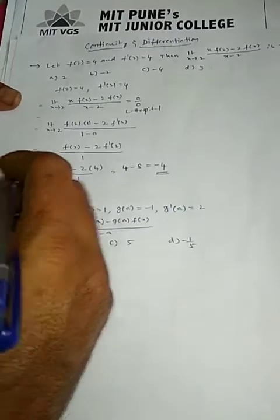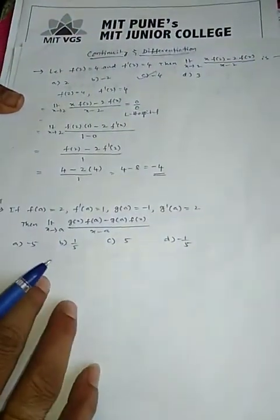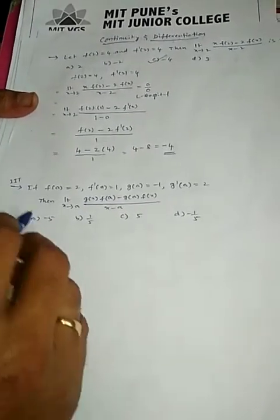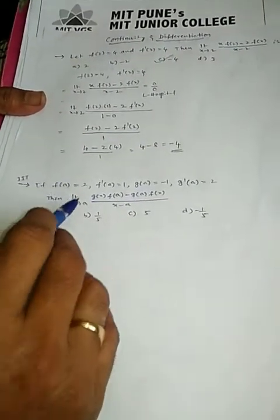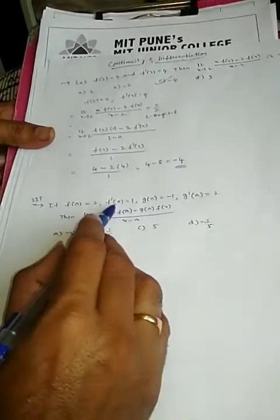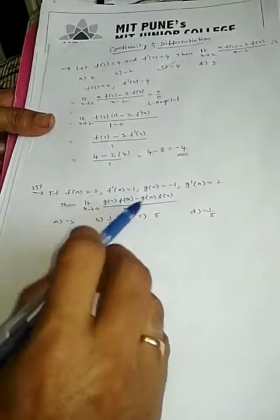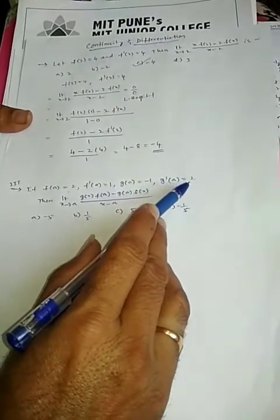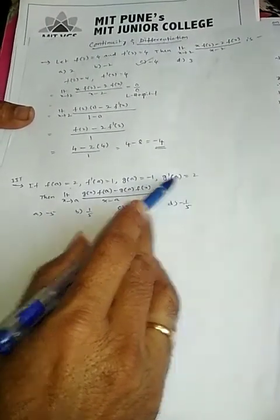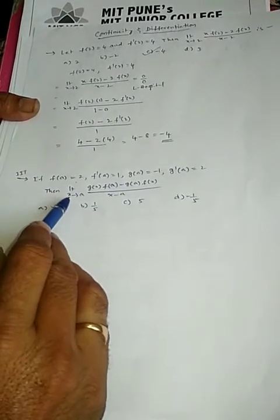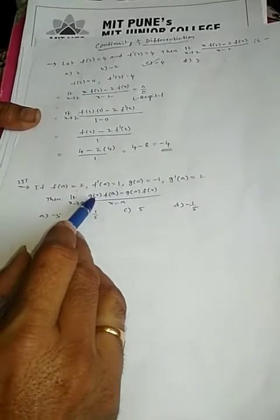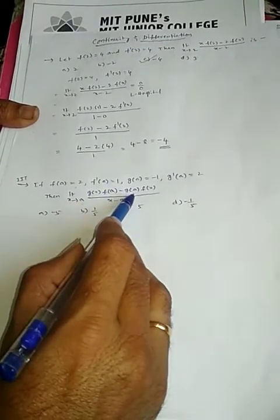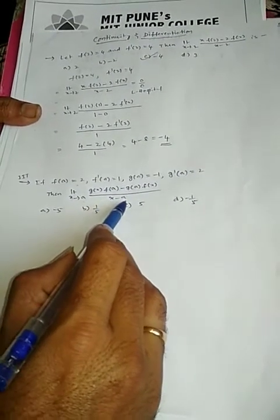So -4 is the correct answer — option C. Now we have one more old IIT JEE question. If f(a) = 2, f'(a) = 1, g(a) = -1, g'(a) = 2, then find the limit as x approaches a of [g(x)·f(a) - g(a)·f(x)] divided by (x - a).